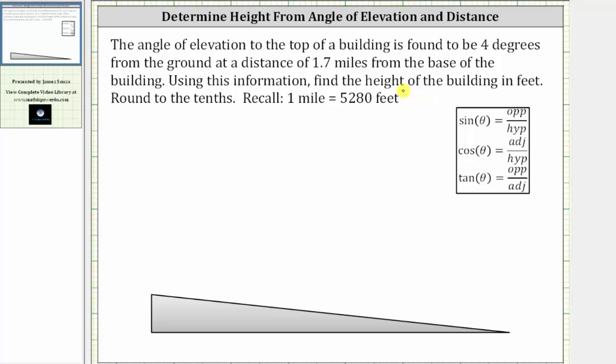Now looking at the right triangle below, the height of the building would be the length of this leg of the right triangle. Let's go ahead and label this H.